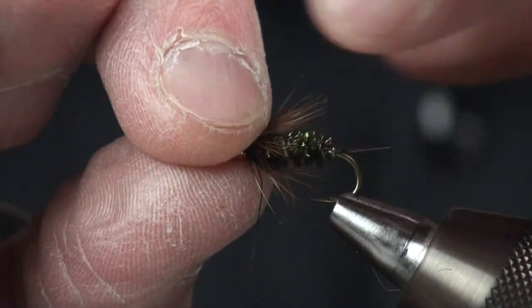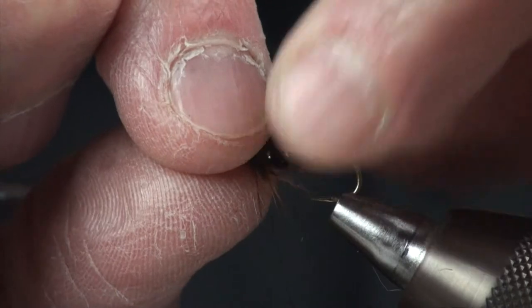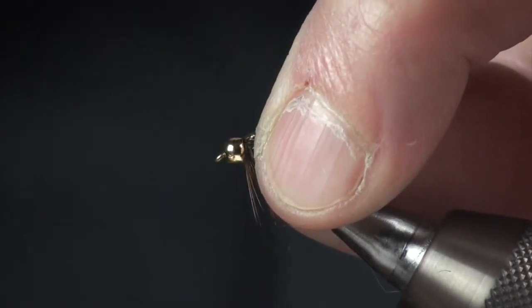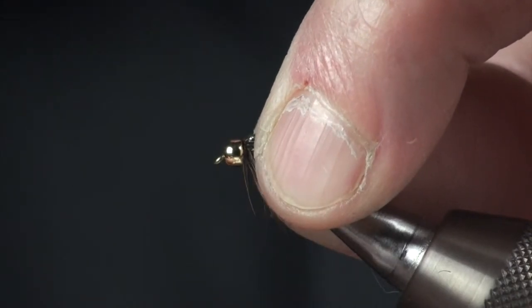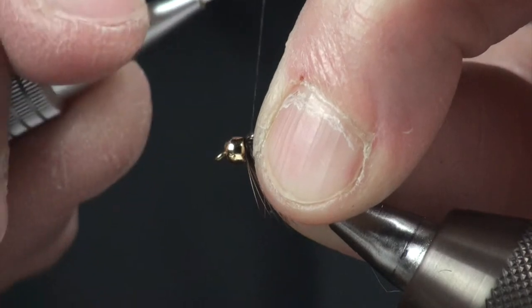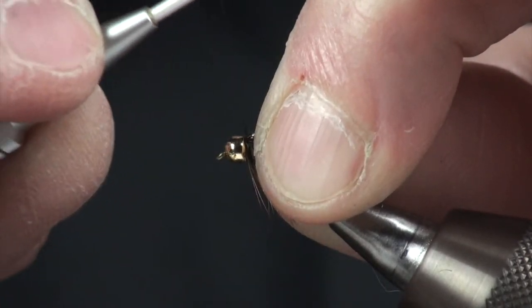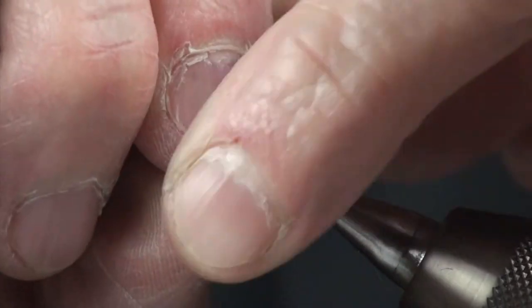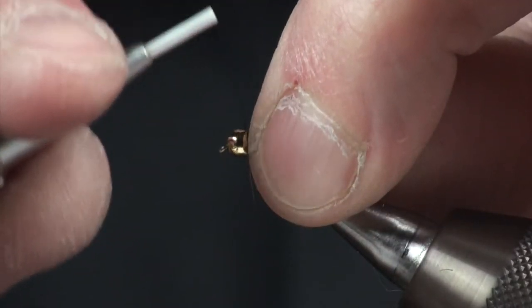Then we want to kind of turn these into more of a collar. Kind of a wet fly look. So I can stroke everything back. Make sure my thread is nice and tight. And then I'm going to wrap a little bit backwards. Trapping all those fibers so that they're swept backwards.